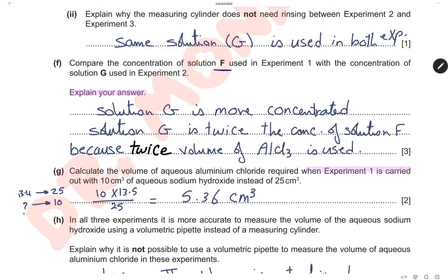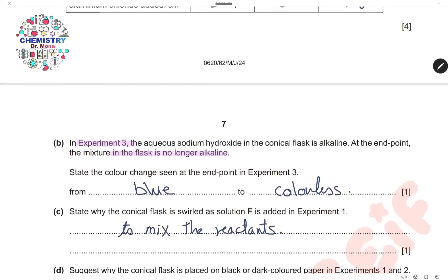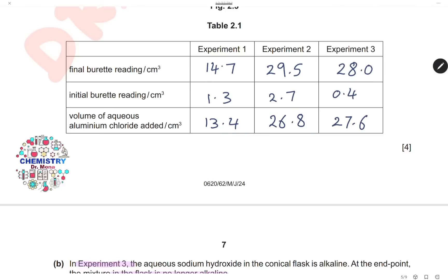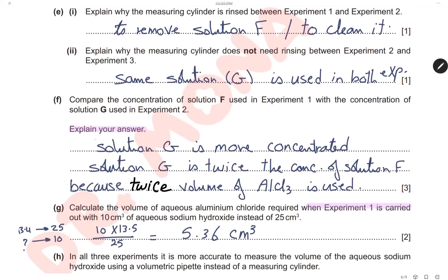Compare the concentration of solution F used in experiment 1 and solution G used in experiment 2. From the table, we used double the volume of aluminum chloride in experiment 2 compared to experiment 1. So solution G is double or twice the concentration of solution F, because we needed twice the volume of aluminum chloride to react with solution G.